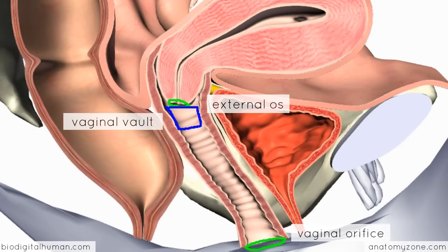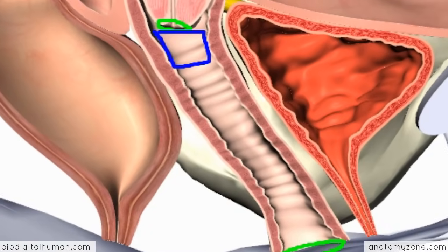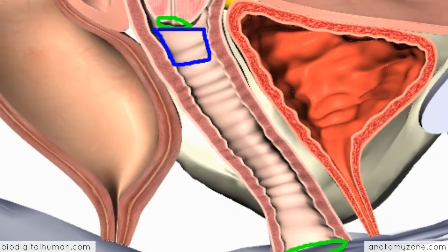Just like the uterus, the vagina has three layers: the outer connective tissue layer, the middle muscular layer, and the internal mucosa.